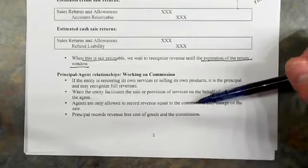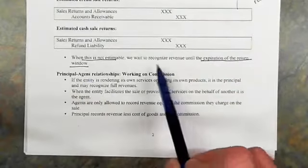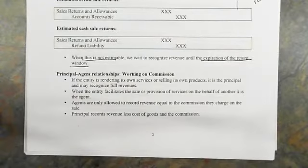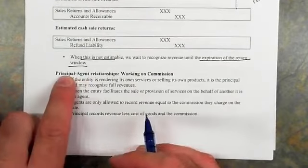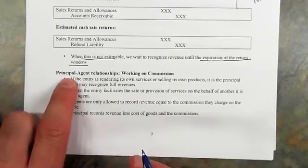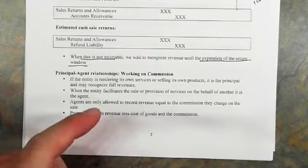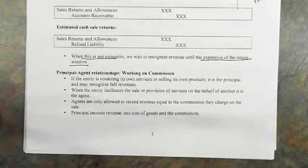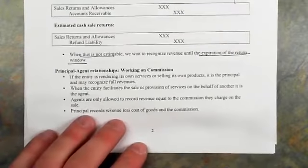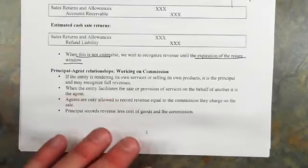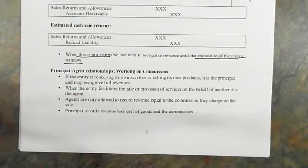Another item that could affect the transaction price is a principal-agent relationship, most aptly summarized as working on commission. Think of Priceline, Hotels.com, or any travel agent — these are agents working on behalf of a principal. The principal is the one actually providing the products or services. If an entity is rendering its own services or selling its own products, it is a principal and recognizes full revenue. The hotel recognizes full revenue regardless of how the room is booked. When the entity is just a facilitator — like online booking sites and travel agents — they are agents.